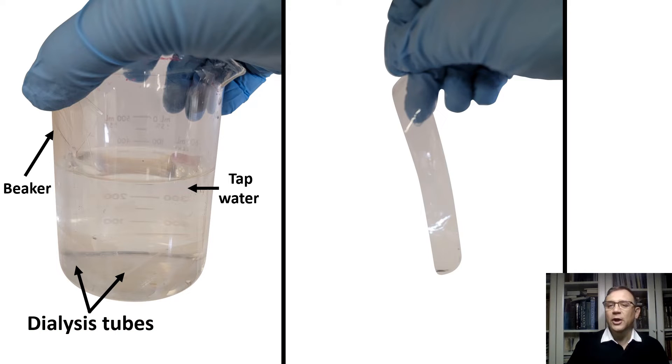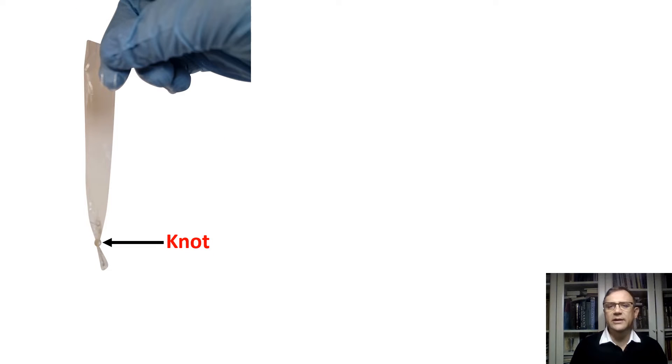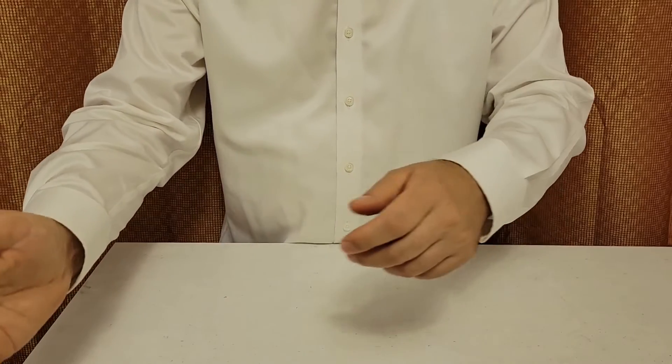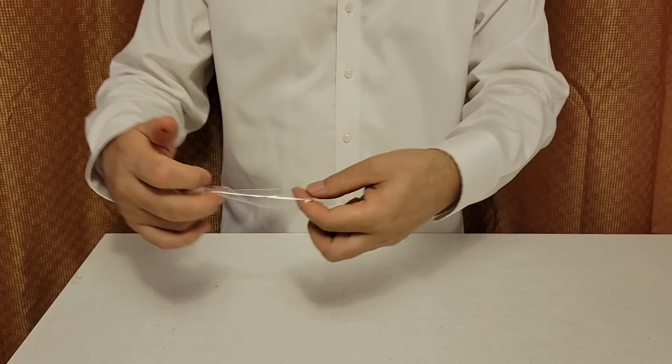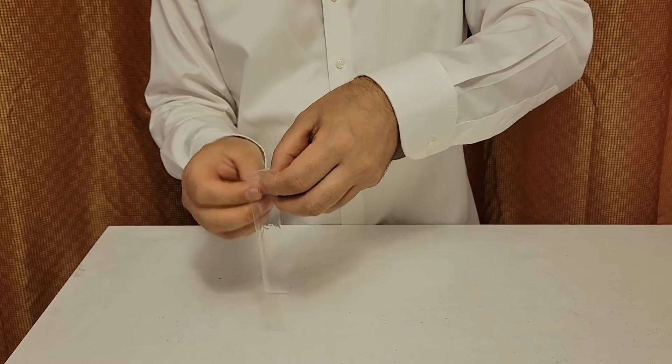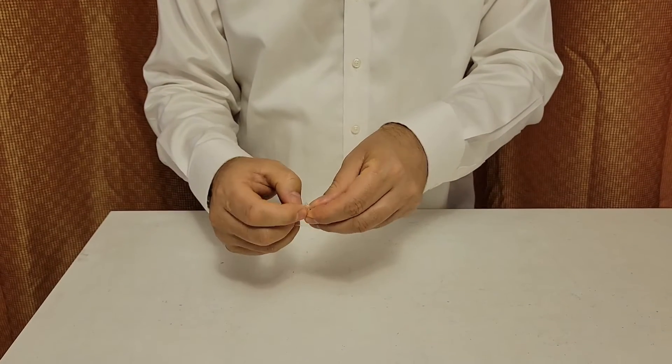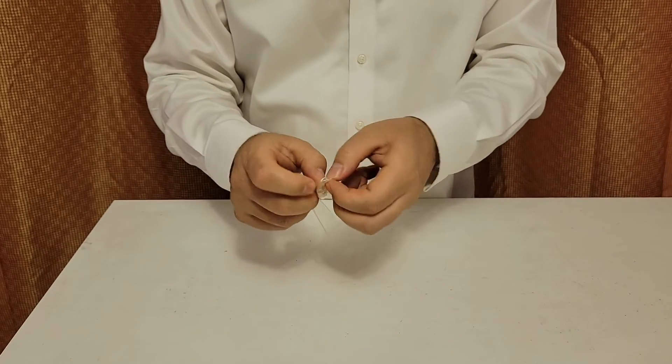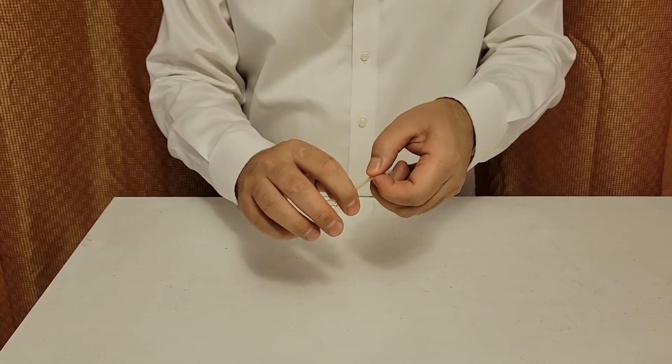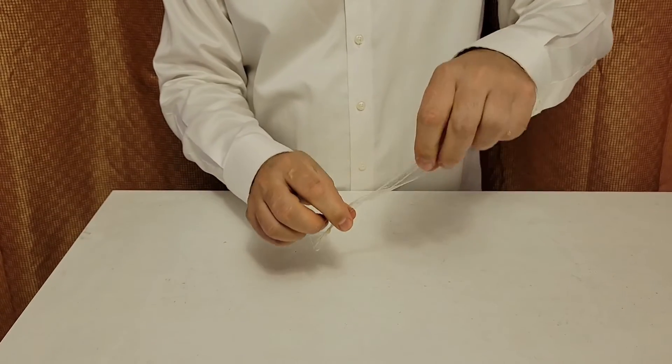After the bags have soaked, we take out one of them. We gently tie a knot at one end of the bag, being careful not to create a hole. Once the knot is secured, we open the other end of the bag by gently rubbing it between two fingers. After we soaked our dialysis tubes, we will have to make dialysis bags. For this, you will have to make a knot at one end, like I do. Here is the knot on one side of the bag. Do you see it? That's how it should be.